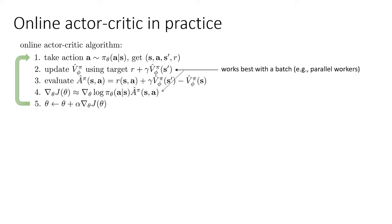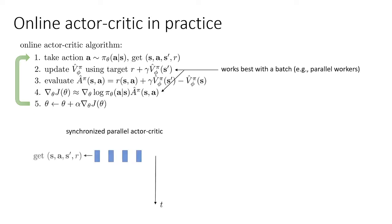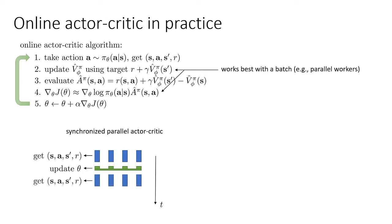One of the ways that we could get a batch is by using parallel workers. This is the most basic kind of parallelized actor-critic — a synchronized parallel actor-critic. Instead of having just one data collection thread or running one simulator, you might run multiple simulators, and each of them will choose an action in step one and generate a transition using different random seeds, so they'll do things that are a little different. Then you will update in step two and step four using data from all of the threads together. The update is synchronous: you take one step for each thread, collect all the data into your batch, use it to update the value function, and then use it to update the policy synchronously.